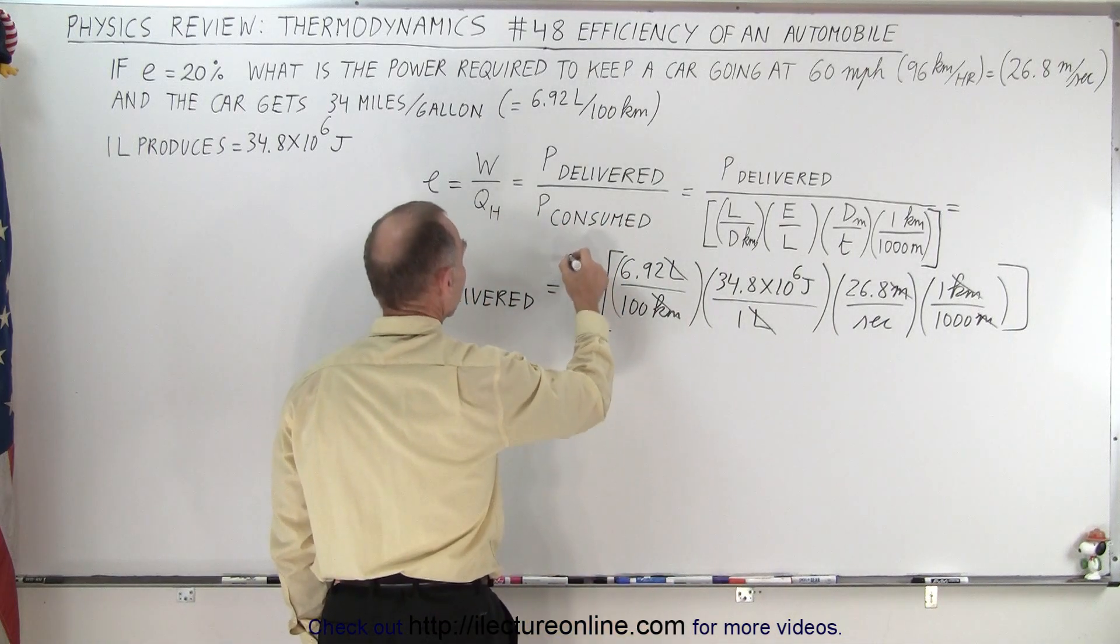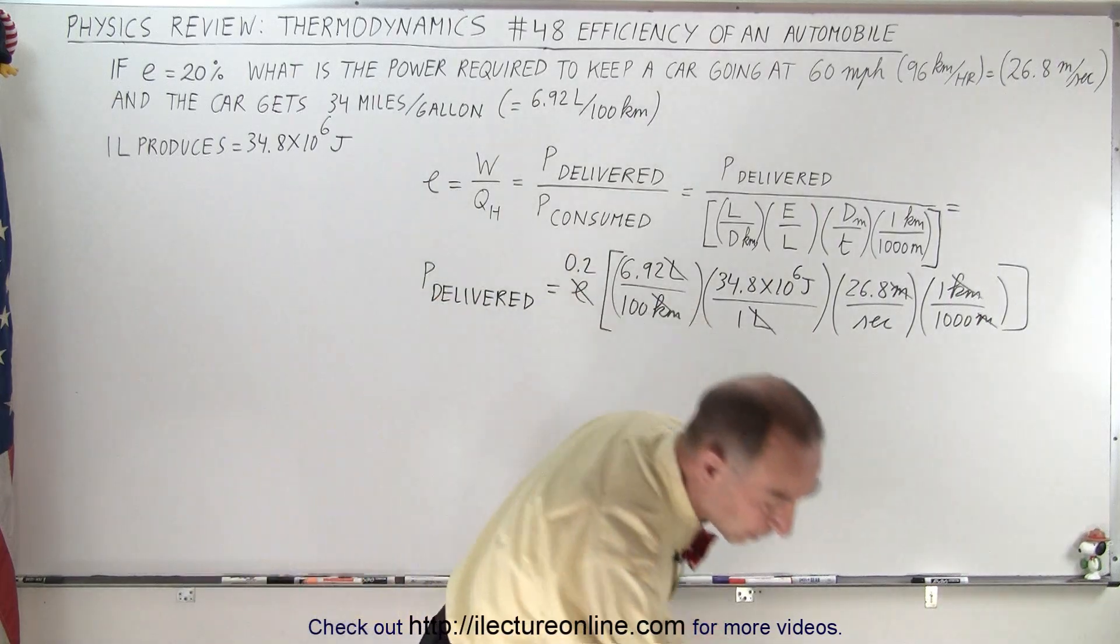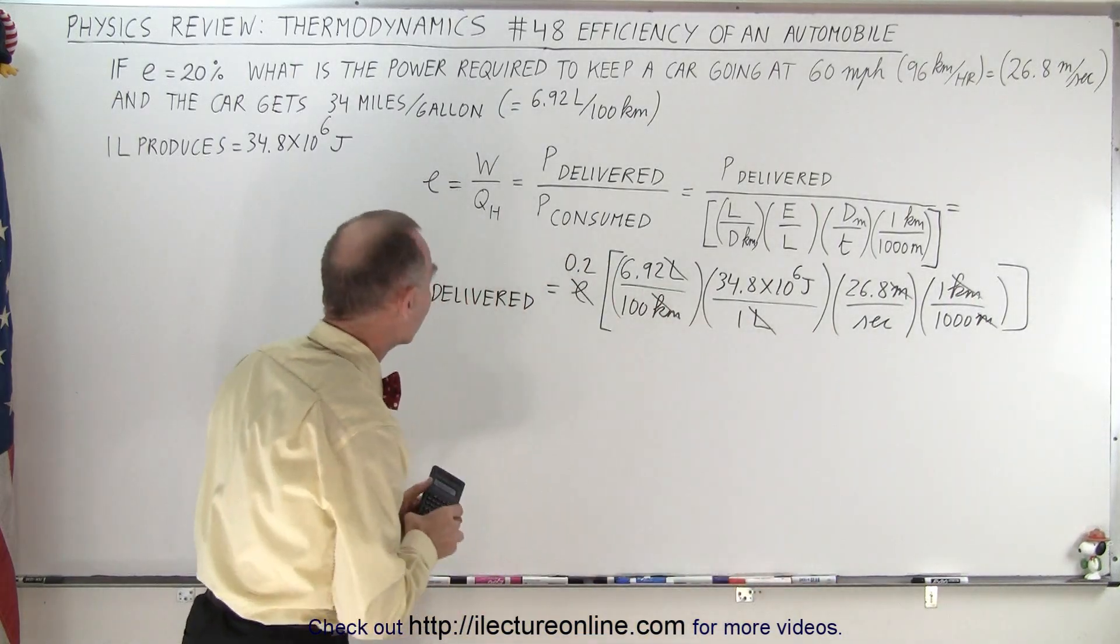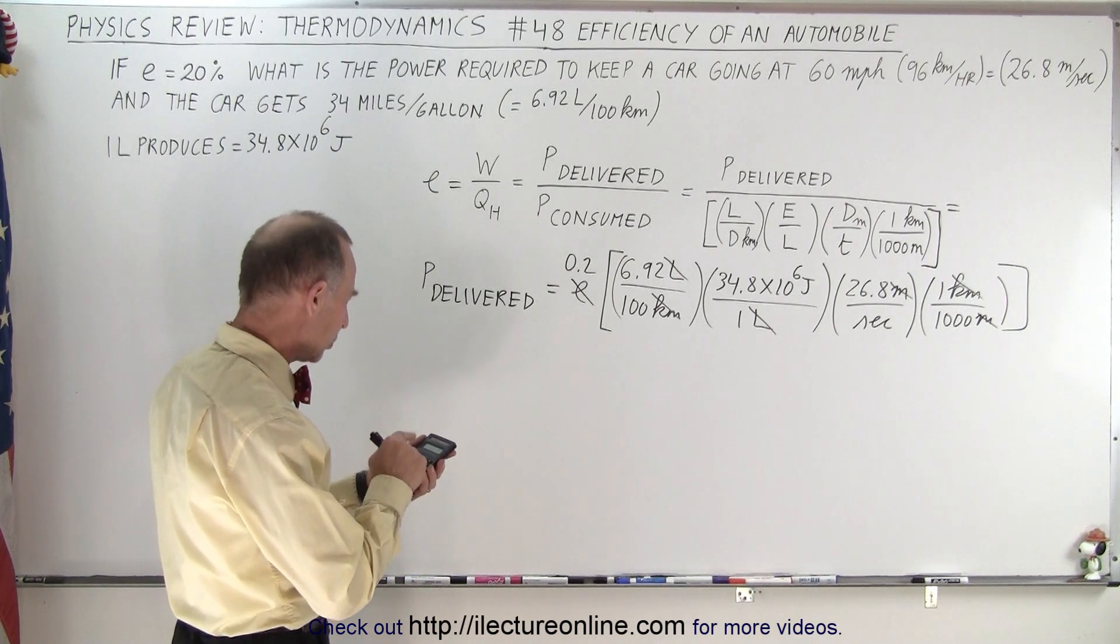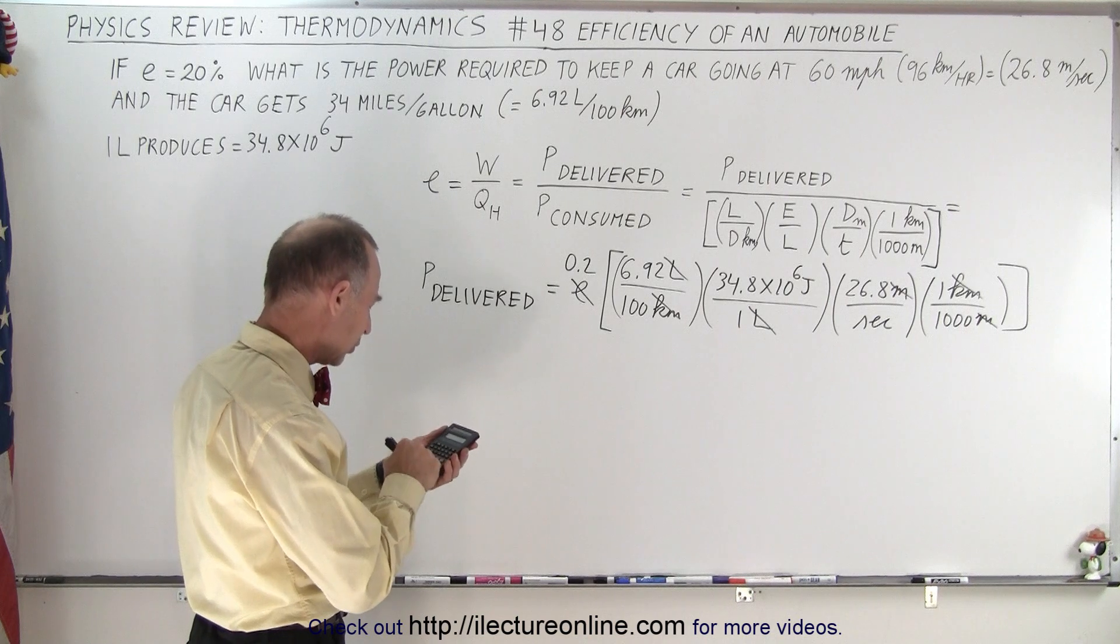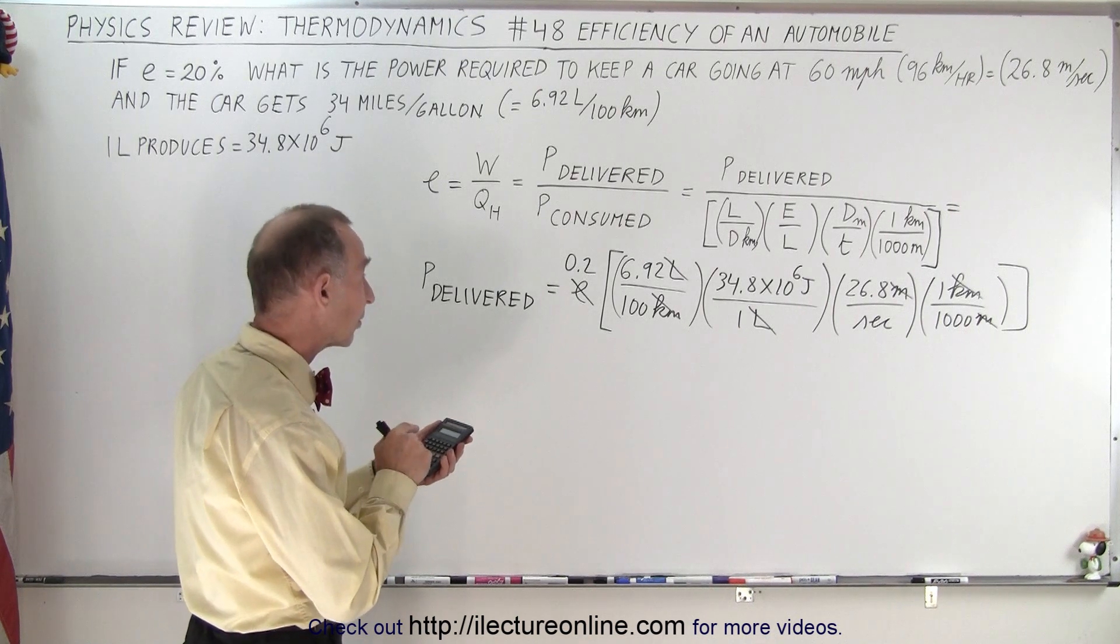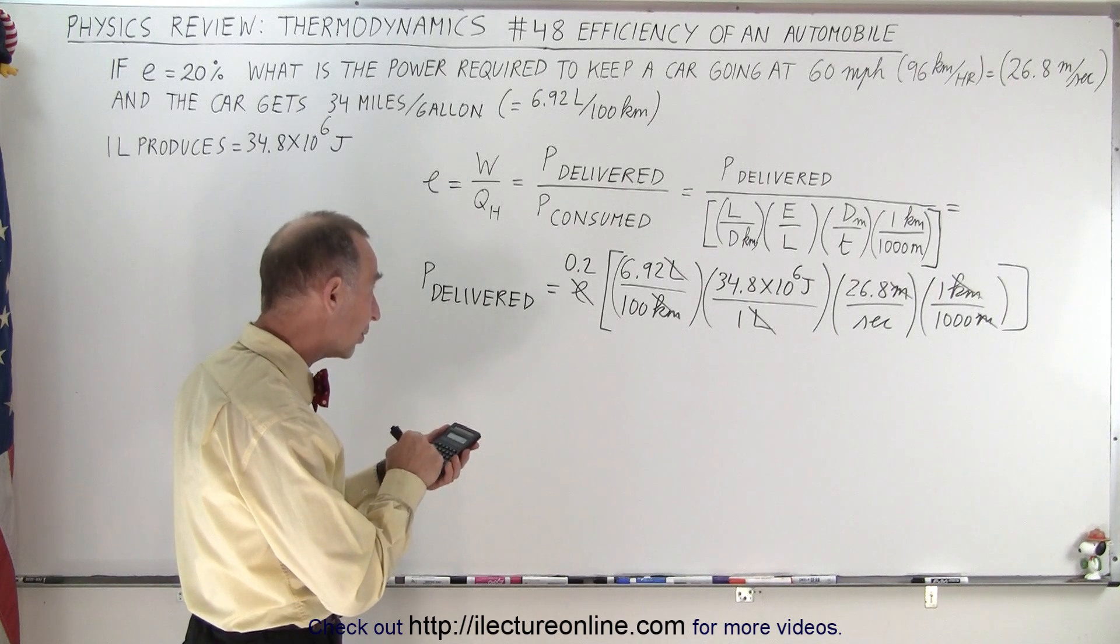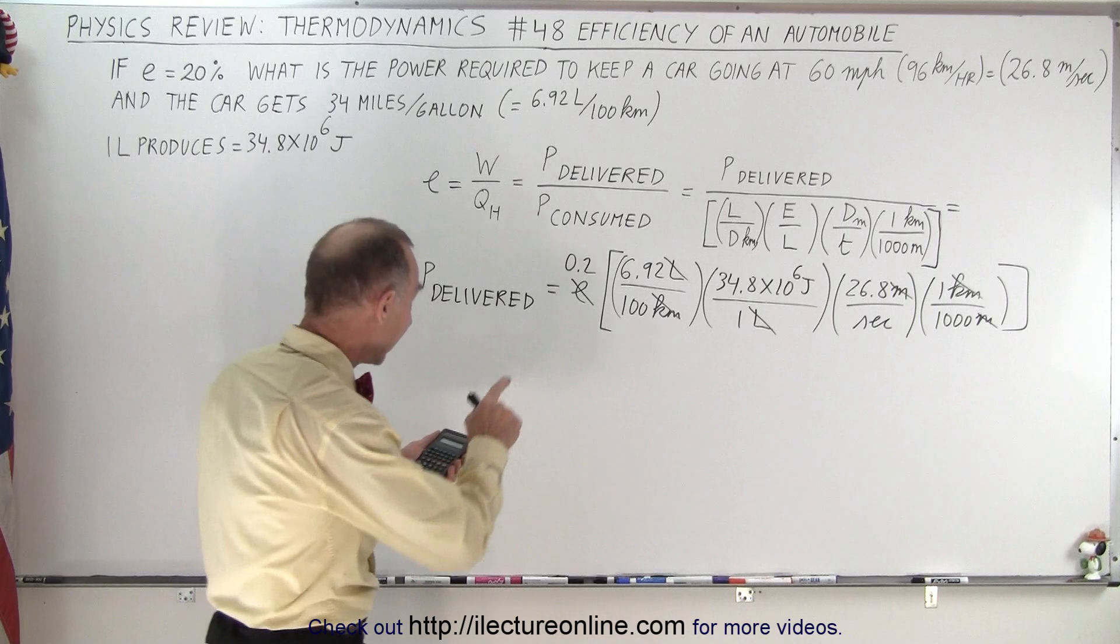So now the efficiency can be replaced by 0.2. And now we need a calculator to figure out what the power delivered is. So this is equal to 0.2 times 6.92 times 34.8 e to the sixth times 26.8 divided by 1,000 and divided by 100.